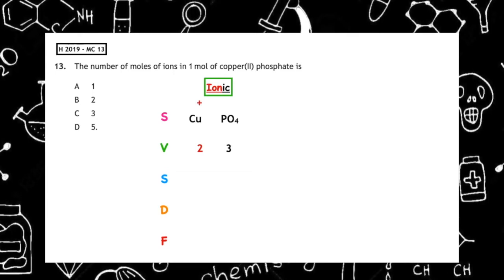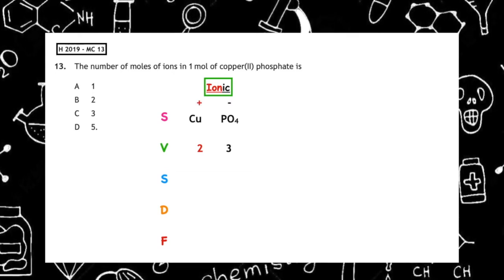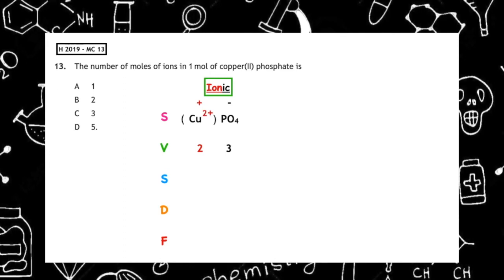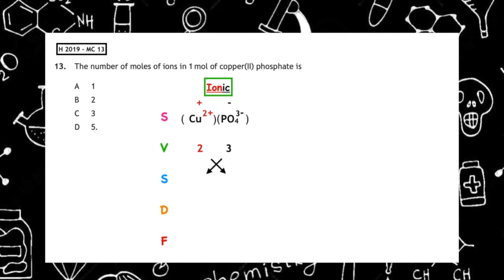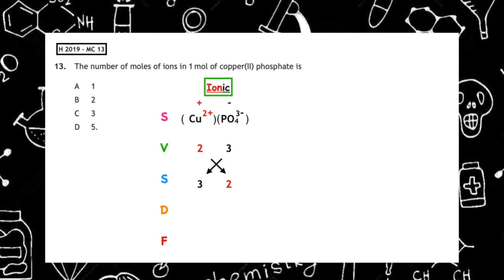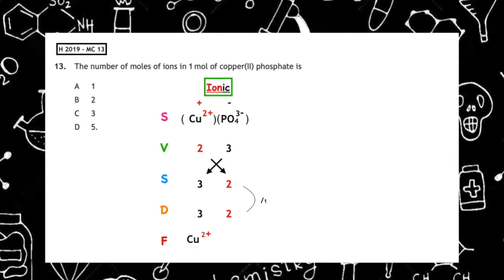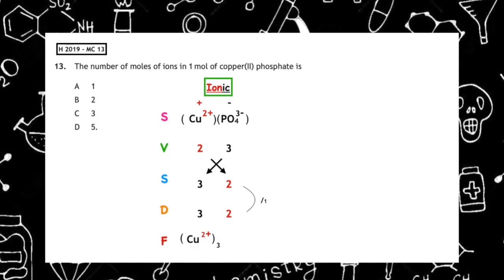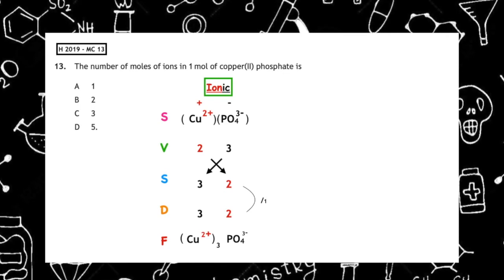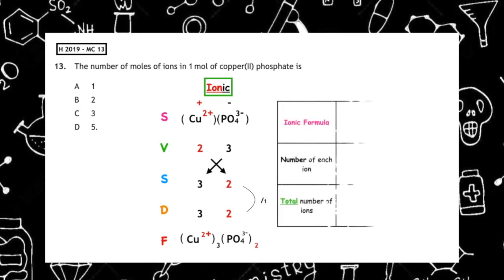We make a sandwich and wrap it up: copper becomes Cu²⁺ in brackets, and phosphate becomes PO₄³⁻ in brackets. We swap over the valences. The highest number that both can be divided by is 1. The ionic formula is therefore (Cu²⁺)₃(PO₄³⁻)₂.